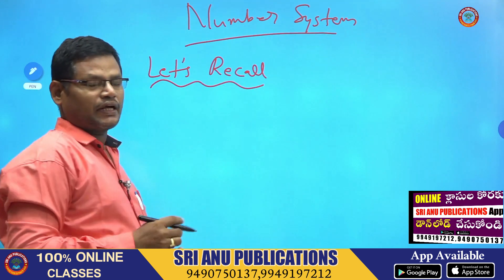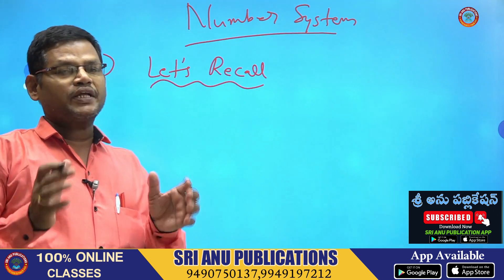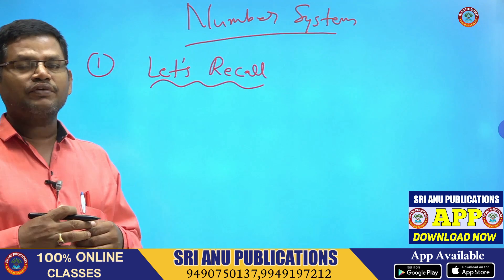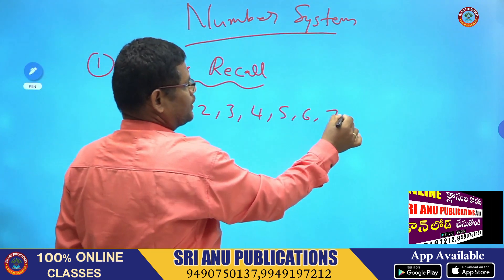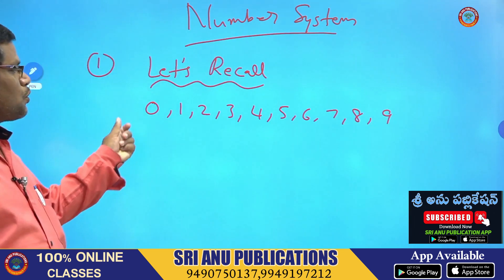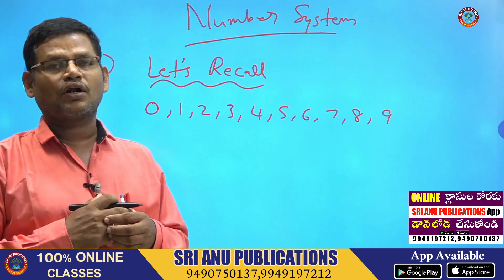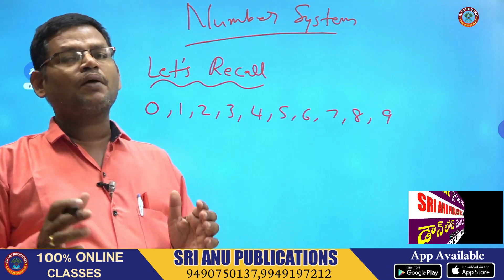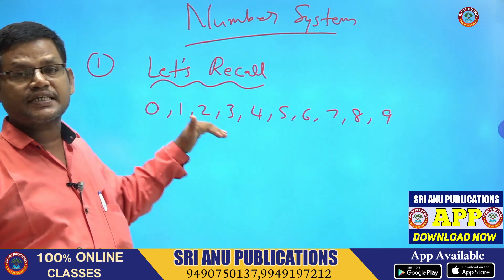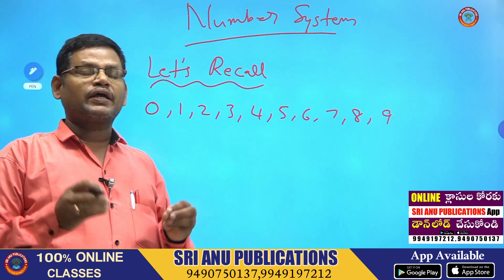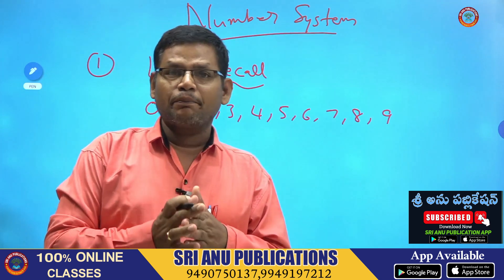From third to up to sixth class, we want to discuss some concepts here. First of all, what is a number and how to form a number? Here 0, 1, 2, 3, 4, 5, 6, 7, 8, 9 — these 10 symbols are called digits. By using the digits we can form a number. These are single digit numbers.